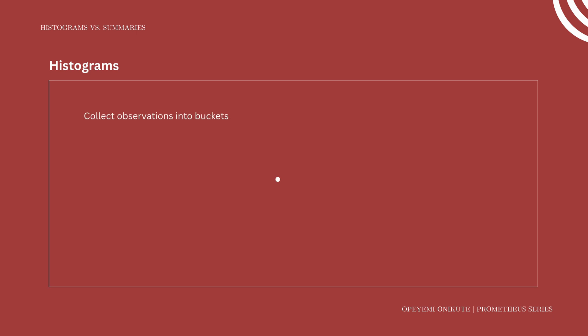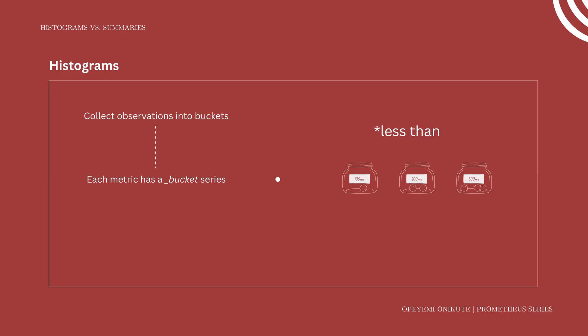Histograms collect observations and place them into buckets. A histogram in Prometheus is like a set of labelled jars used to collect marbles. Each jar represents an upper limit — for example, values up to 100 milliseconds. When an observation occurs, such as a request taking 250 milliseconds, we place a marble in every jar whose label is greater than or equal to the observation. For each bucket, Prometheus keeps a cumulative counter that counts the number of observations less than or equal to the bucket's value.